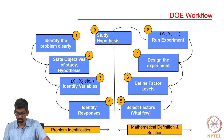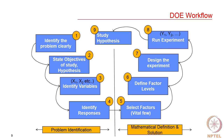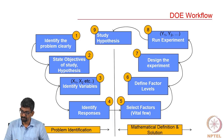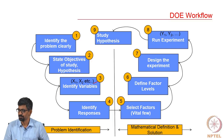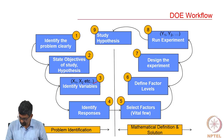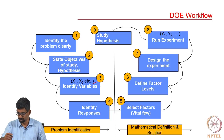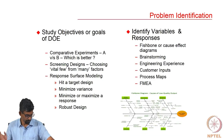This is a general DOE workflow — it is like a general new product development process. You identify the problem clearly, state your objectives and hypotheses, identify your variables x1, x2. From the trivial many you go to the vital few: you select the key factors, define your factor levels or bounds, do your design of experiment, run your experiments, and then study your hypothesis and analysis with a surrogate model. I will wrap it up here.